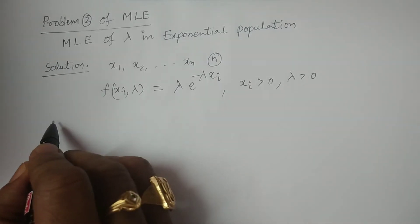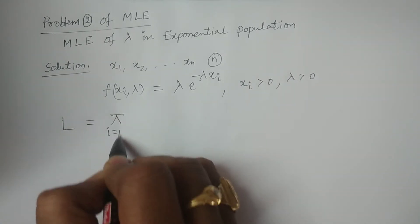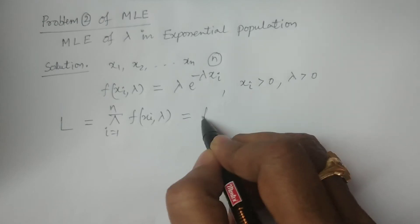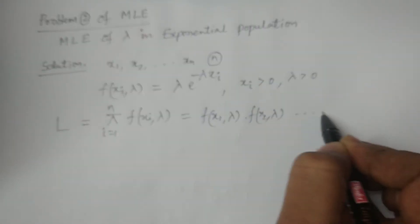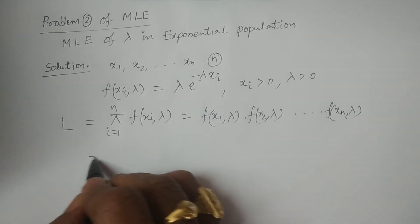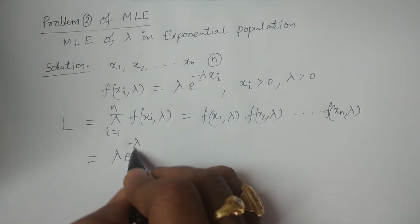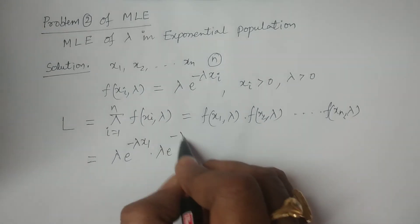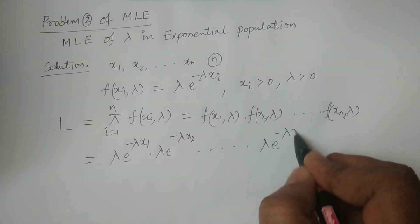Directly, I am coming to the calculation of likelihood function L. The likelihood function is the product from i=1 to n of f(xi, lambda). We can write this as f(x1, lambda) · f(x2, lambda) · ... · f(xn, lambda), which expands to [lambda · e^(minus lambda·x1)] · [lambda · e^(minus lambda·x2)] · ... · [lambda · e^(minus lambda·xn)].